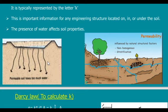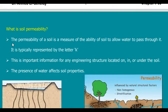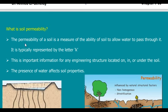Hydrology is very important for us, similar to geology. We are going to study many things, but soil permeability is the first thing we have to understand. Permeability means the ability of water to pass through soil — in some cases it is very quick, in some cases very slow, depending on the type of soil. Permeability is typically represented by the letter K, and it is an important parameter for any engineering structure located on, in, or under the soil.